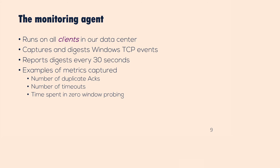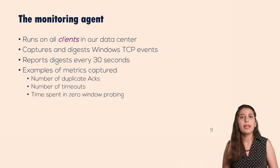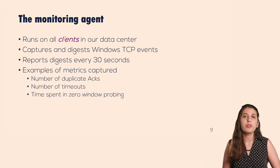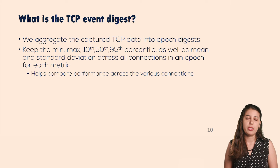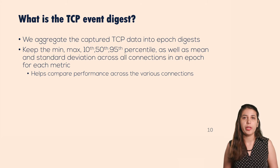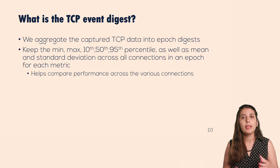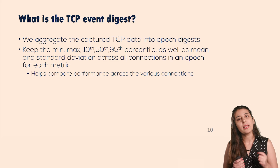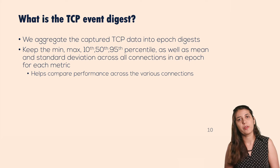The monitoring agent captures TCP ETW events and forms a digest of these events to send back to the learning agent. Examples of metrics we capture include the number of duplicate ACKs, number of triple duplicate ACKs, time spent in zero-window probing, and so on. For each TCP metric, we compute the min, max, 10th, 50th, and 95th percentile, as well as the mean and standard deviation across all metrics in an epoch — which for us is a 30-second period — across all connections active within that epoch. This allows us to reason about how connections compare in terms of performance for each metric.